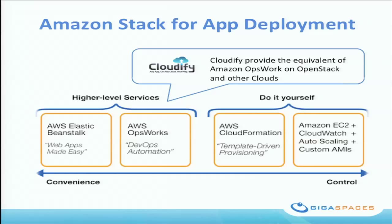The two axes here are control and convenience. When you move to the extreme of PaaS, you're in a very convenient world — you don't think about infrastructure, but you lose a lot of control over availability, DR, performance, and scaling. On the other side, you have full control but high complexity. OpsWorks fills that void — also within OpenStack — giving a high degree of control without costing too much in terms of complexity. We're trying to fill that same box within OpenStack.